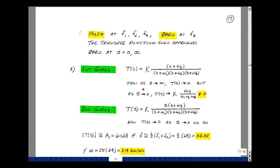But as we look at low frequencies, as S approaches 0, the numerator is ω3, and the denominator is ω1 times ω2 times ω4, and all this is multiplied by K. But that's not approaching 0, so we're missing something.